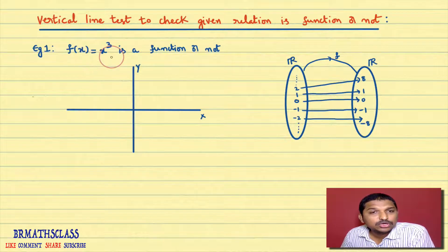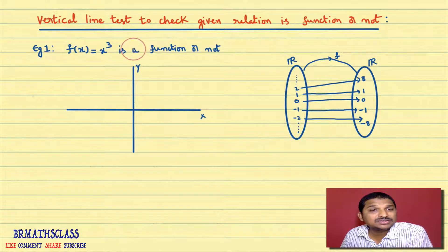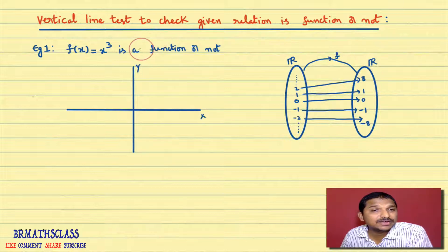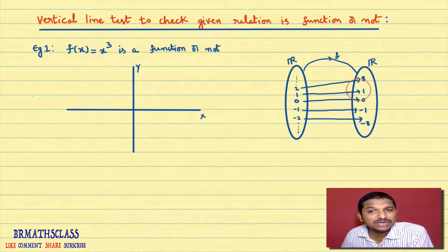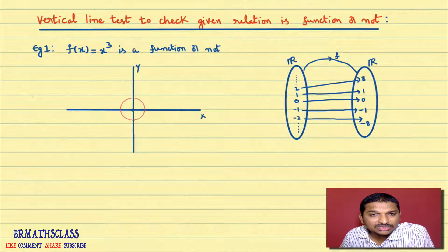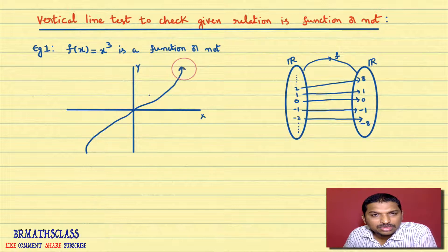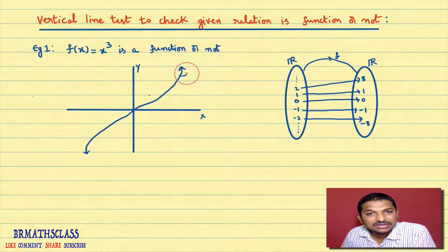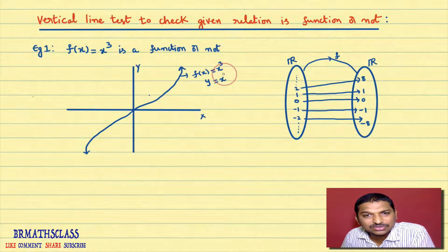For f(x) = x³, we know the standard graph. If you are preparing for JEE Mains or JEE Advanced, you must remember standard graphs: modulus function graph, parabola graph, circle graph, greatest integer function graphs — these are standard functions and you must know their graphs. Here the function is x³. The x values from the first set are the x-axis values, and the functional values — also known as y values — form the y-axis. The graph of f(x) = x³, that is y = x³, looks like this.